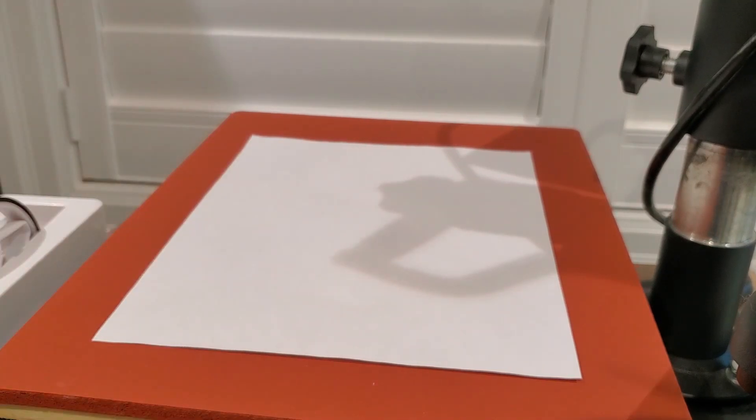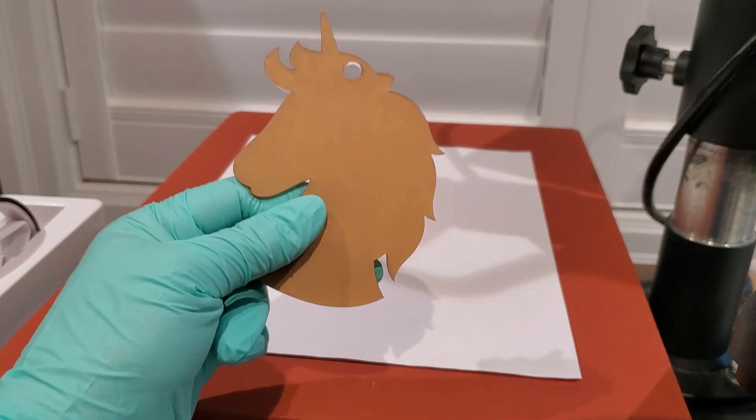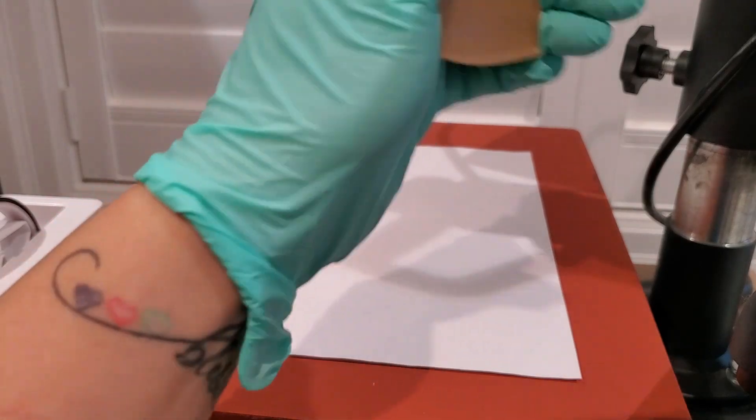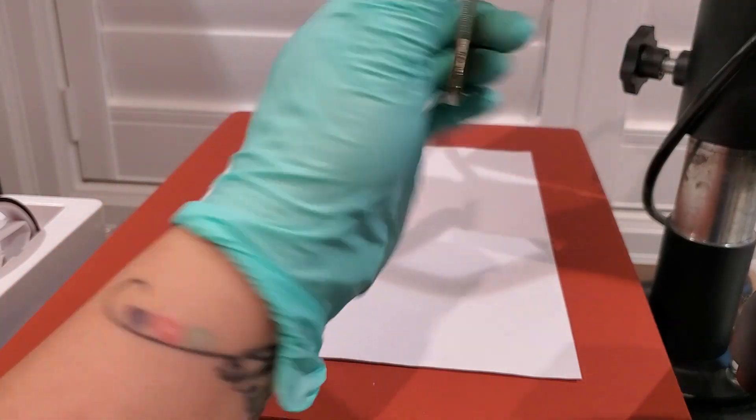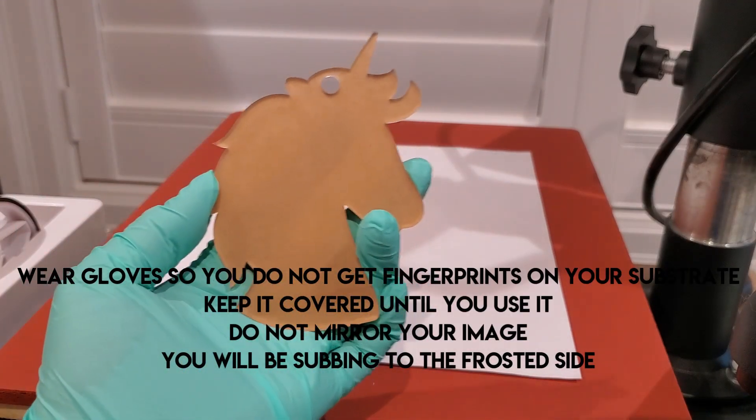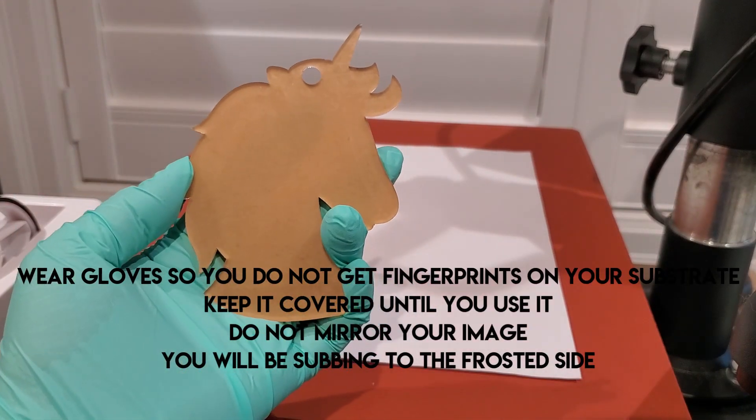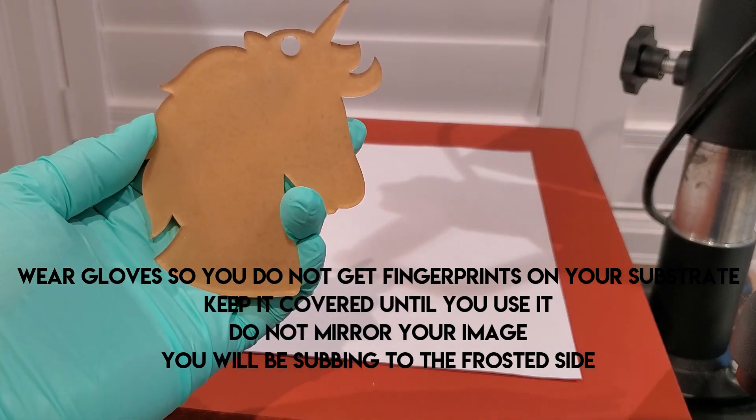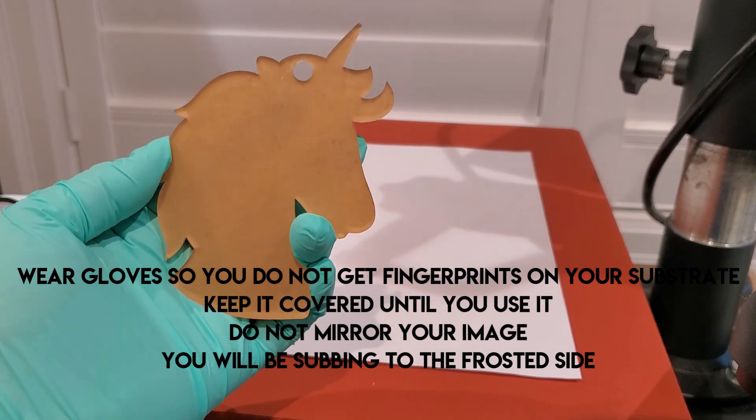We're going to start today with, I'm going to actually sub this unicorn. I'm going to make a bookmark keychain for my daughter. They all come with a protective coating. Now when you're subbing, you're going to be subbing the frosted side. So it's very important for you to know that you will not be mirroring your image.